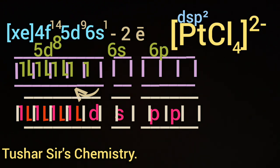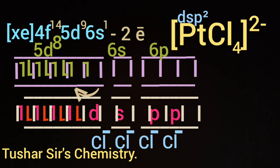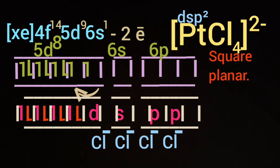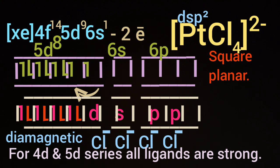4Cl⁻ will approach Pt²⁺ to form 4 coordinate bonds on 4 different sides. The type of hybridization in case of this complex ion is dsp², and its shape will be square planar.